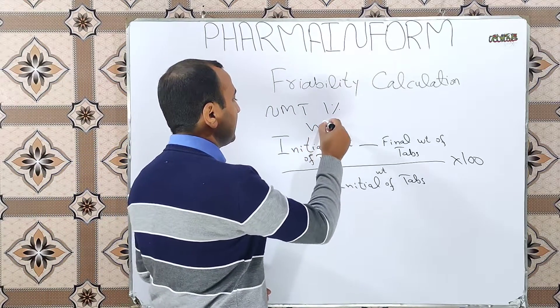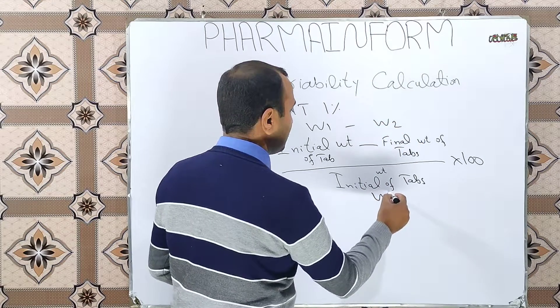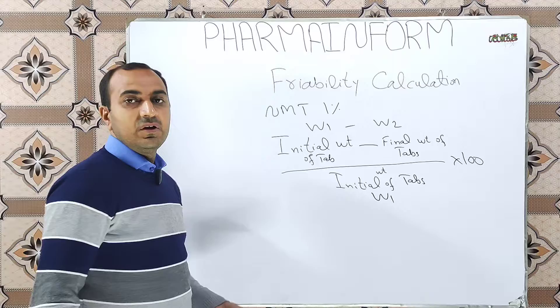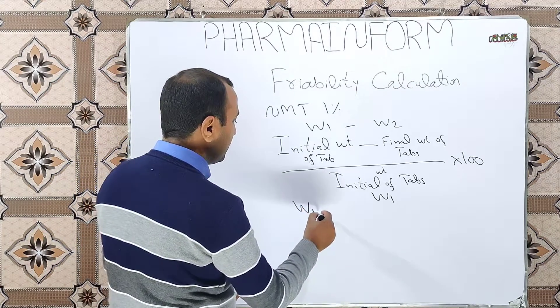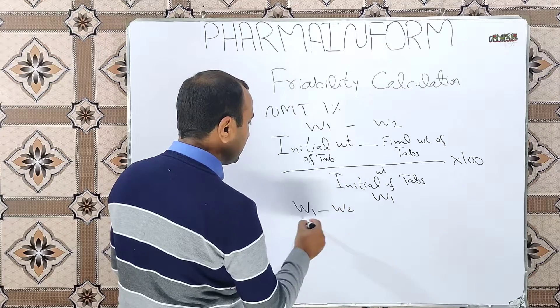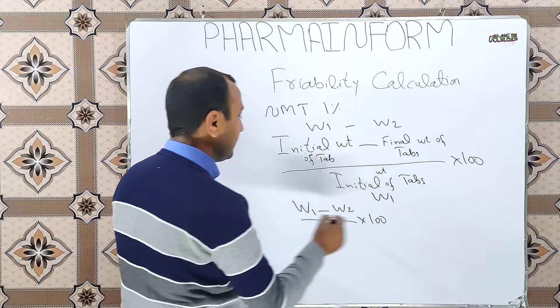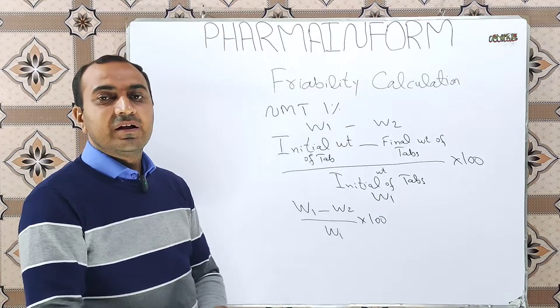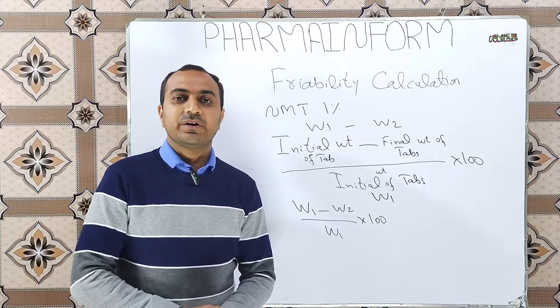It is also written as W1 minus W2 divided by W1 into 100, or for easy understanding, W1 minus W2 over W1 into 100. W1 is initial weight, W2 is the final weight, and W1 divided by is the initial weight.